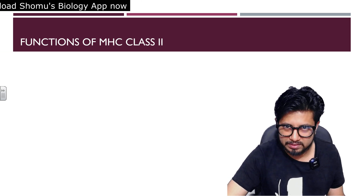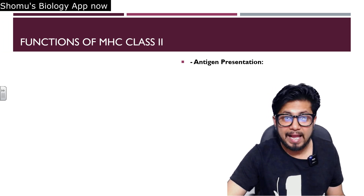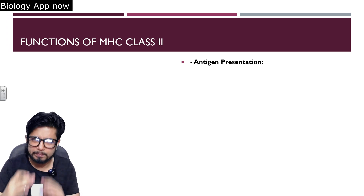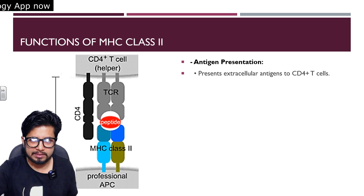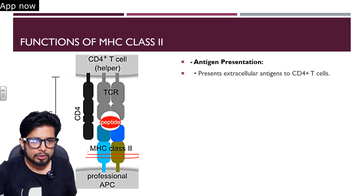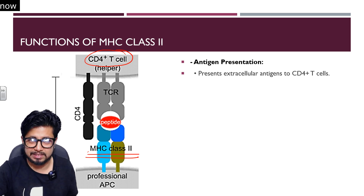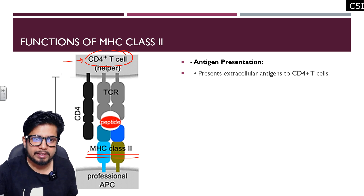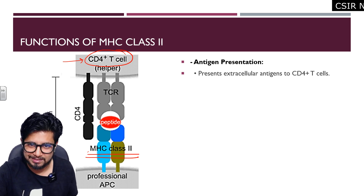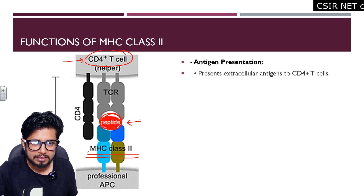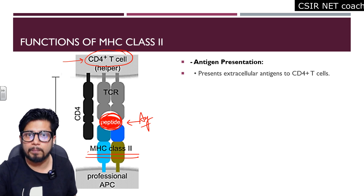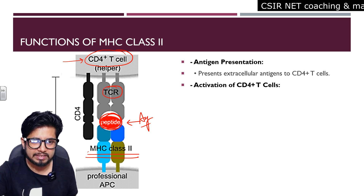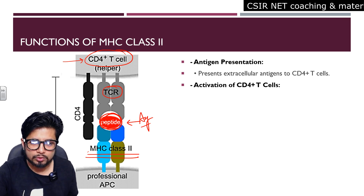The function of MHC class 2 is antigen presentation — specifically exogenous antigen presentation. Any antigen or part of a pathogenic fragment is presented by this MHC class 2 molecule to CD4-positive T cells, also known as T helper cells. The activation of CD4-positive T helper cells occurs because the CD4-positive T helper cell along with its TCR connects to the peptide showcased by MHC class 2.